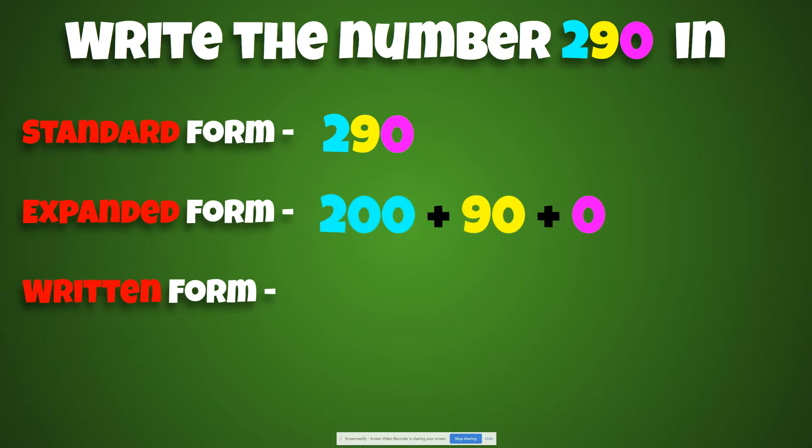And expanded form, you explode the number to see the value of each digit. It is 200 plus 90 plus 0. Good job. Good job. Mario thinks you're doing fantastic. And written form, you write it 290. Good job, guys. We're about to go to the next one. So erase your boards.